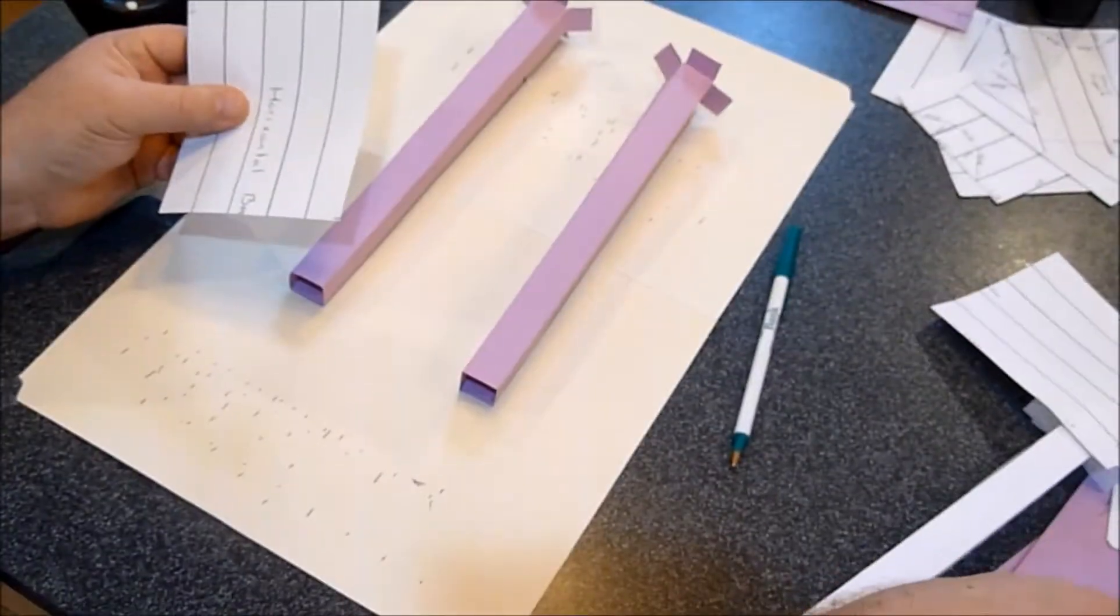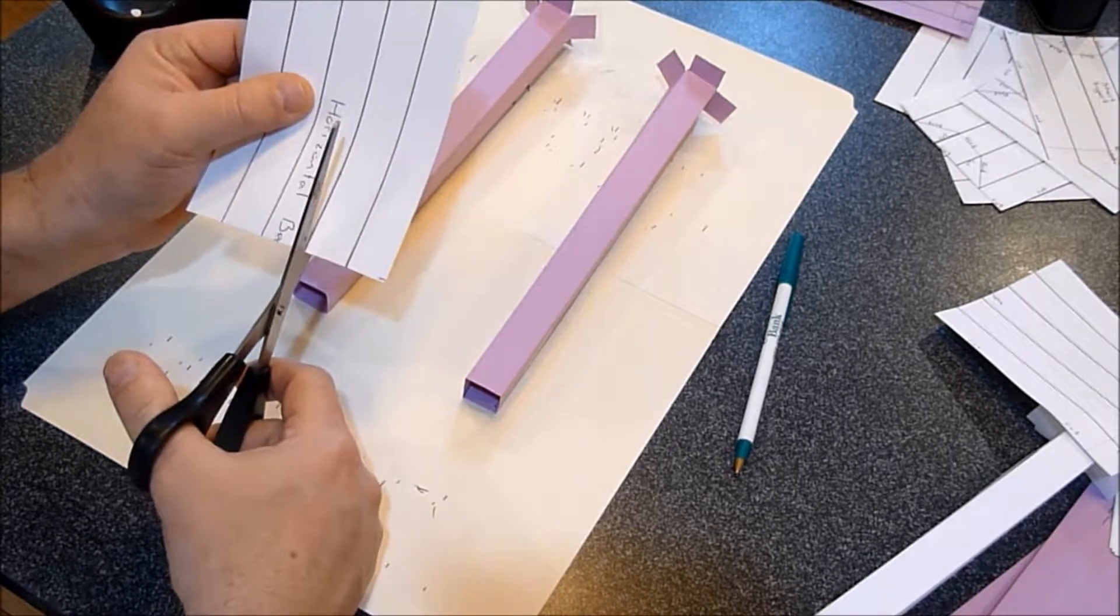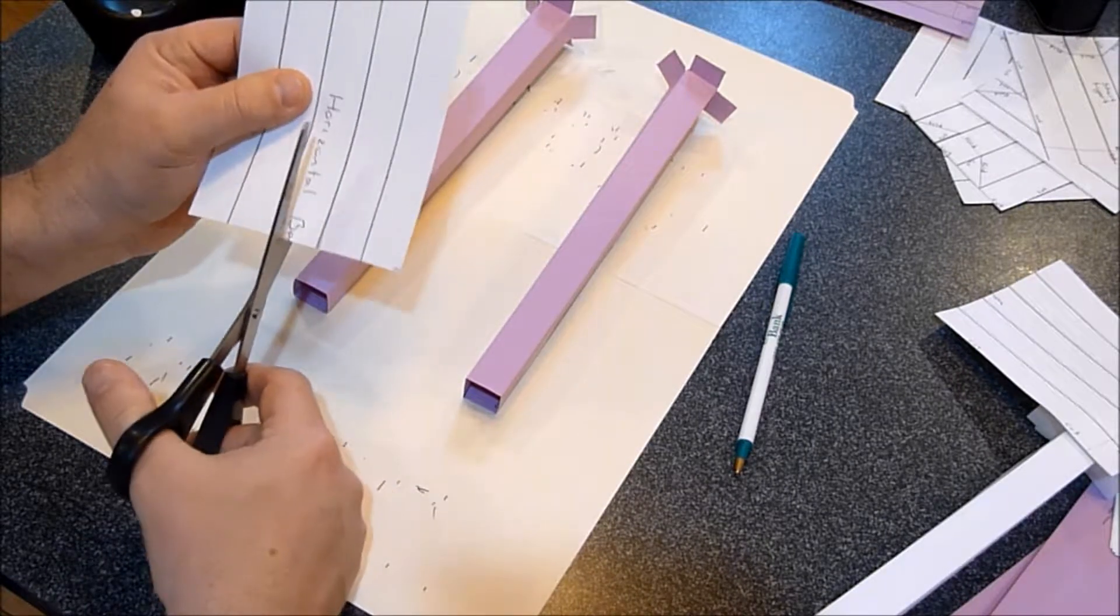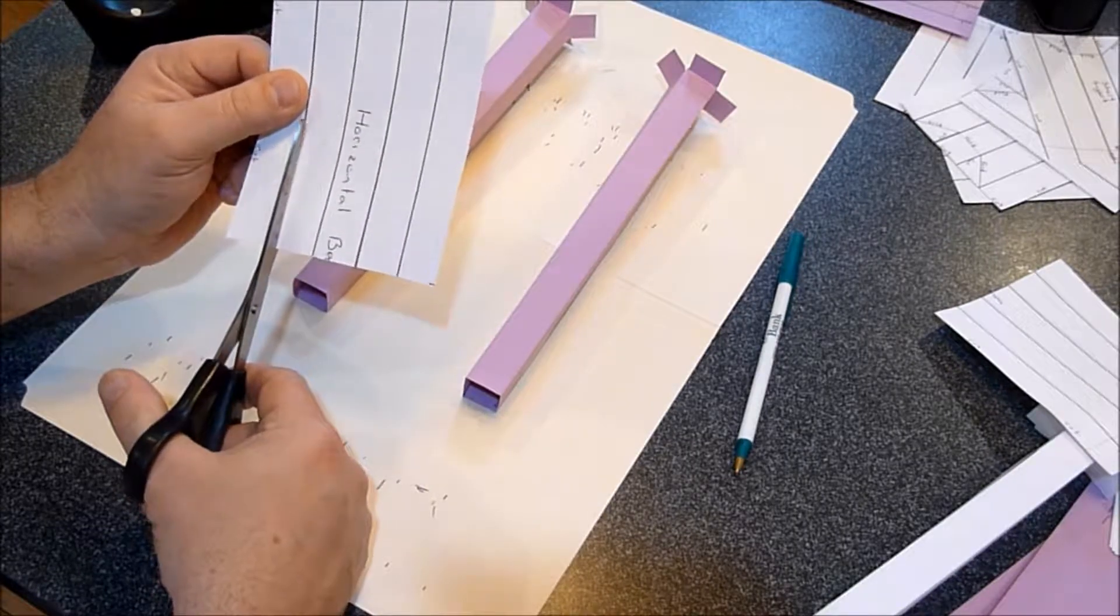Now before you fold it, remember on the horizontal beams we cut on all the lines. So you just cut in a little bit, cut in a little bit, cut in a little bit, and cut in a little bit.